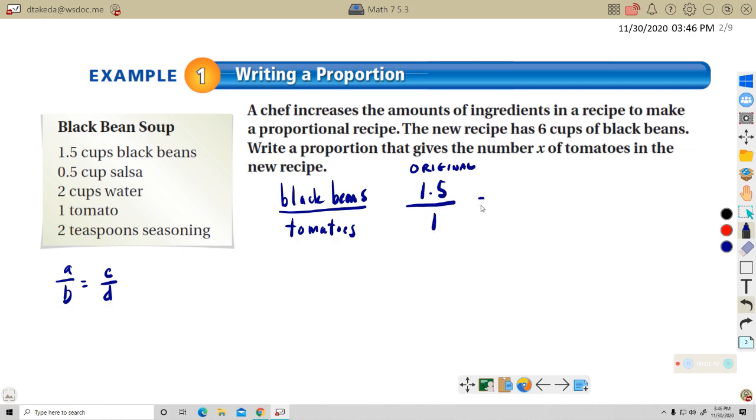But in the original recipe, there's 1.5 cups of black beans compared to one tomato. All right. Now in the new recipe, the new recipe has six cups of black beans. Where does that go? That goes on the top, black beans on top. And X is the number of tomatoes in the new one. All right. So we're going to use cross products here. So let me say 1.5 times X, and we're going to just write that as 1.5X. When you see a number next to a variable, that just means we're multiplying 1.5X. And that's going to be equal to six times one, which is six.